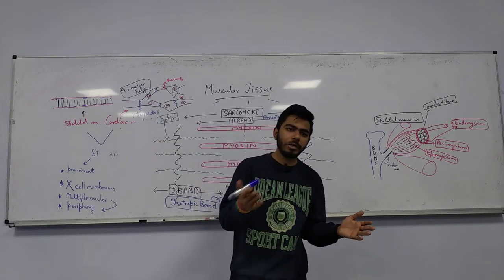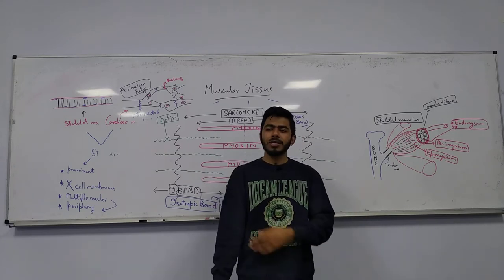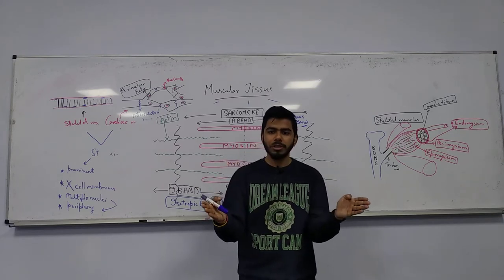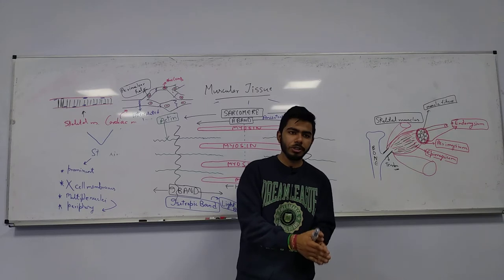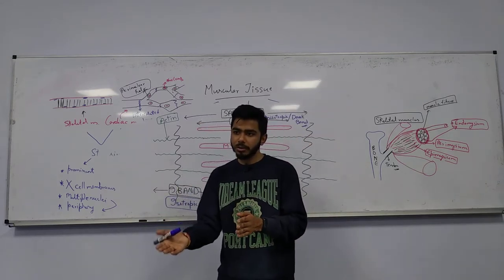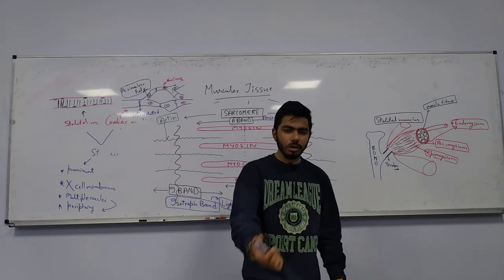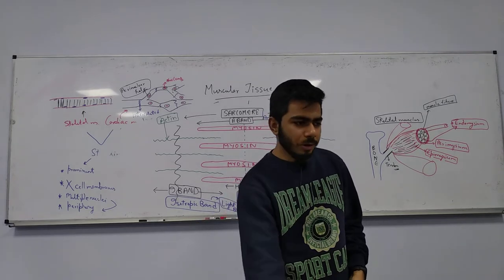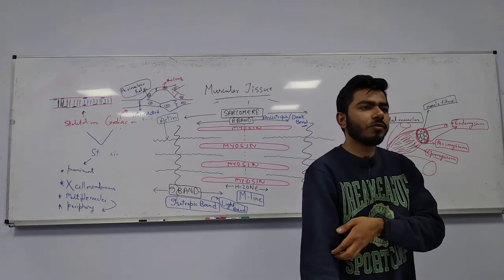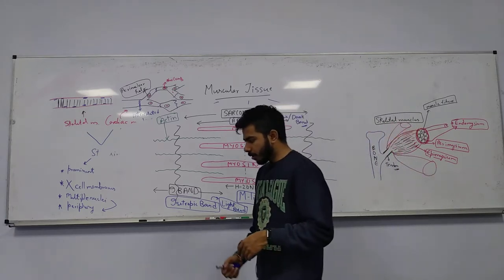Now let's talk about isotonic and isometric contraction. If the size of the muscle is getting shorter — if the muscle size is changing — this is isotonic contraction. For example, if you are pulling some kind of weight, like pulling a table, your muscle is contracting — that is isotonic.